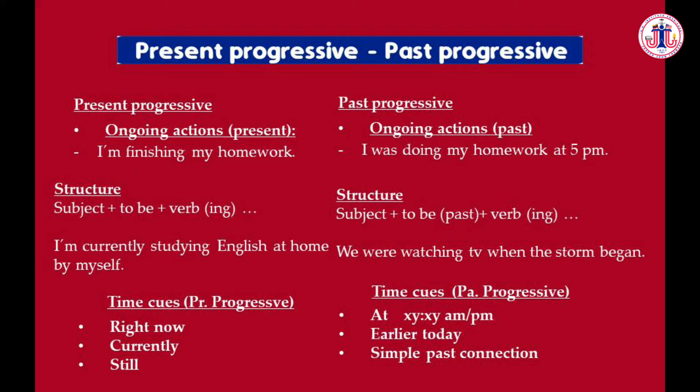The past progressive is also used to describe ongoing actions, but in the past — things happening at a specific moment in the past. For example: 'I was doing my homework at 5 p.m.' — meaning at that moment I wasn't finished, I was still doing my homework.